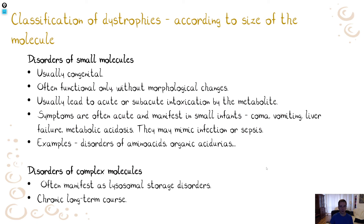We can also classify dystrophies according to the size of the molecule. Diseases associated with morphologically visible storage of material are usually disorders of larger complex molecules, and are often lysosomal, usually chronic with long-term courses. Disorders of small molecules are very often congenital and functional only, without morphological correlation. They resemble intoxication, infection, or sepsis, because they usually lead to acute or subacute intoxication by a metabolite. Symptoms are often manifest in small infants and can mimic infection, sepsis, or intoxication — with symptoms such as coma, vomiting, liver failure, and metabolic acidosis. Typical examples are disorders of amino acids or organic acids.